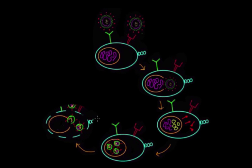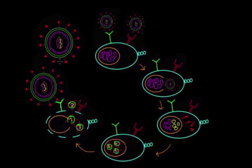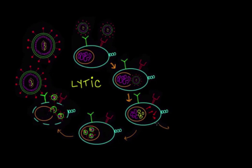In the lytic cycle, the host cell bursts open, or lysis, in order to release newly formed viruses and viral proteins. This causes the death of the host cell, in this case, our B-cell.